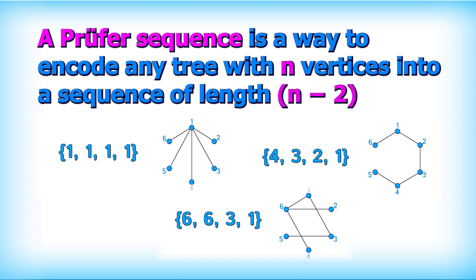there would in fact be 6 to the power of 4 of these sequences. And in general, there would be n to the power of n minus 2 for any value of n. But it's not clear why there's exactly one proof of sequence for each tree and vice versa.